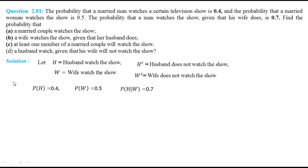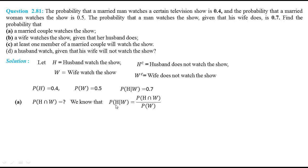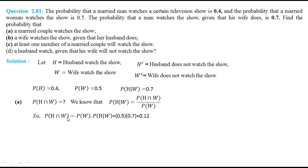Part A: a married couple both watch the show, meaning the husband watches and the wife watches. We need probability of H intersection W. We know that probability of H given W equals probability of H intersection W divided by probability of W. Multiplying both sides by probability of W, we get probability of H intersection W. Substituting the values, we have the result 0.35 for the probability that both the man and woman watch the show.